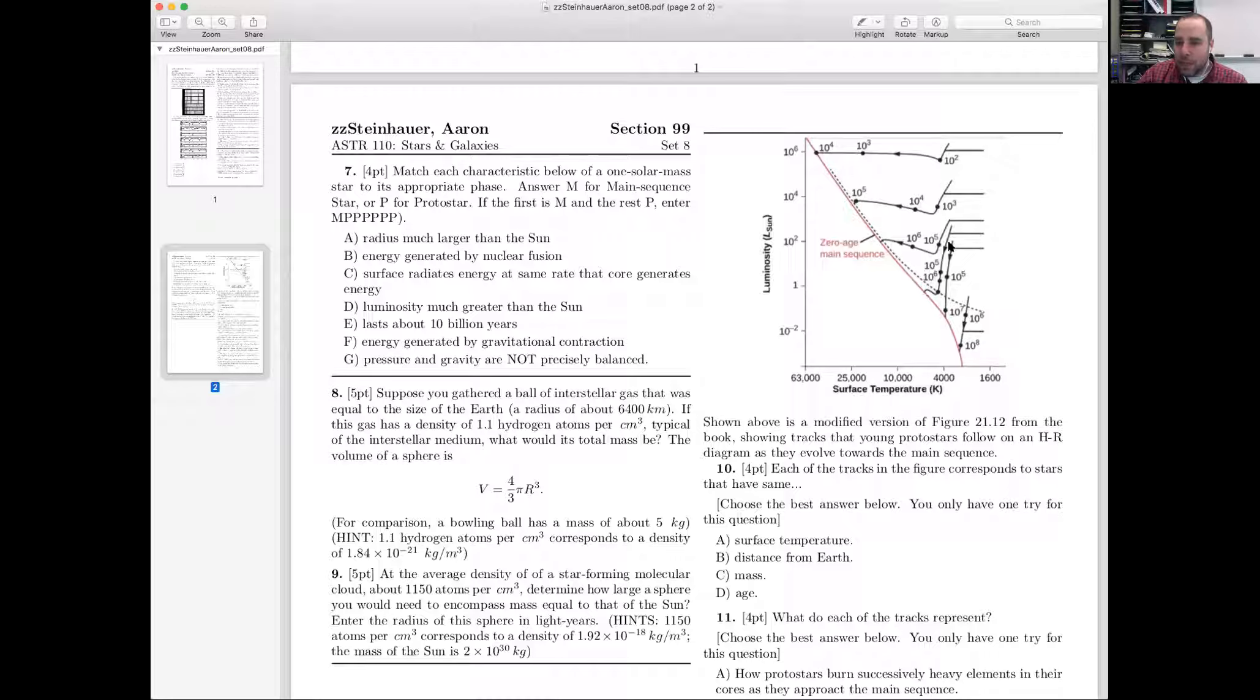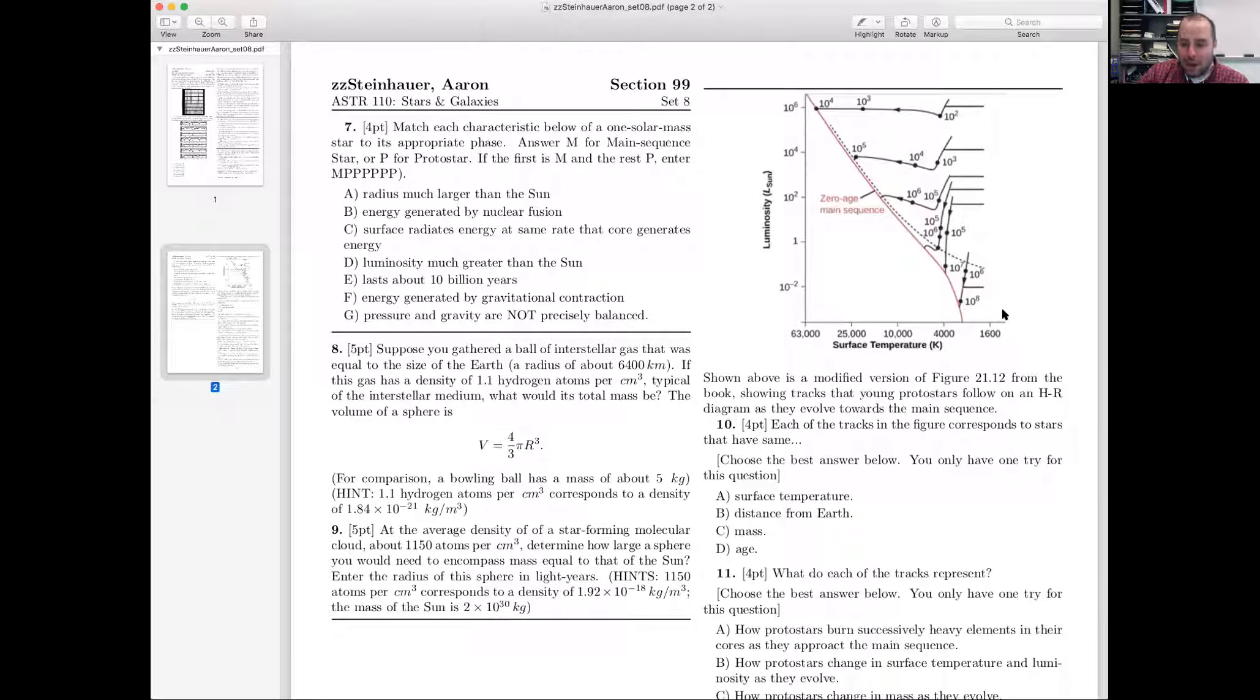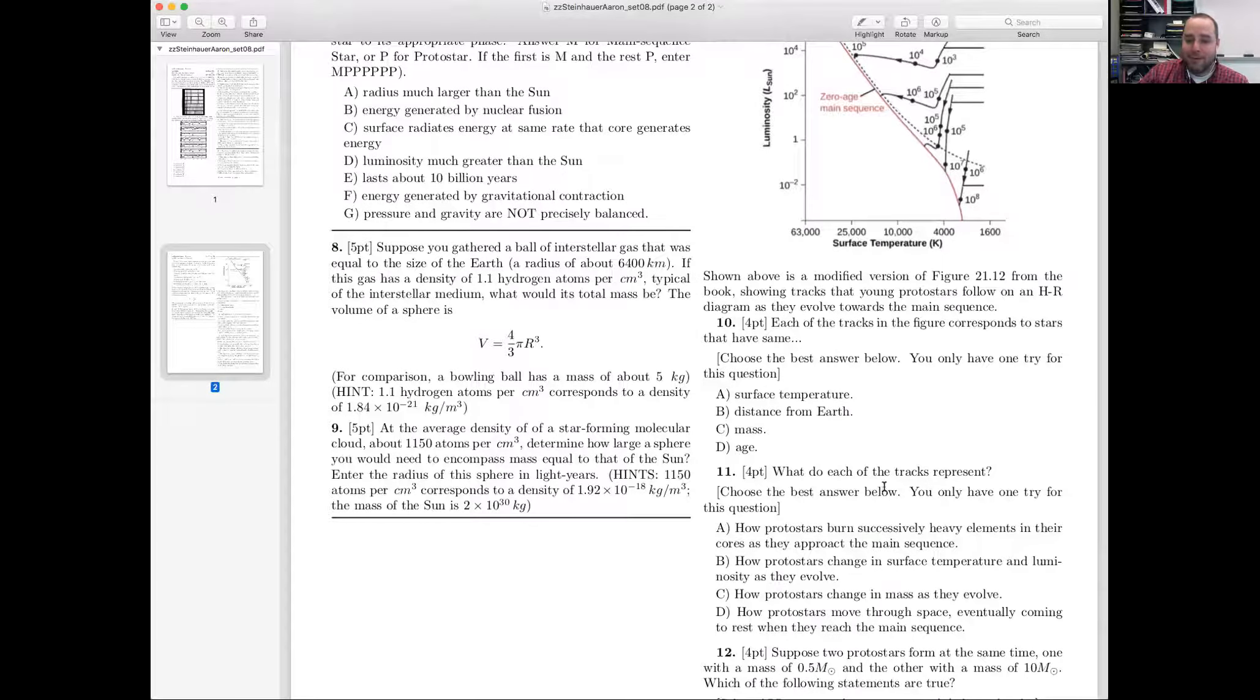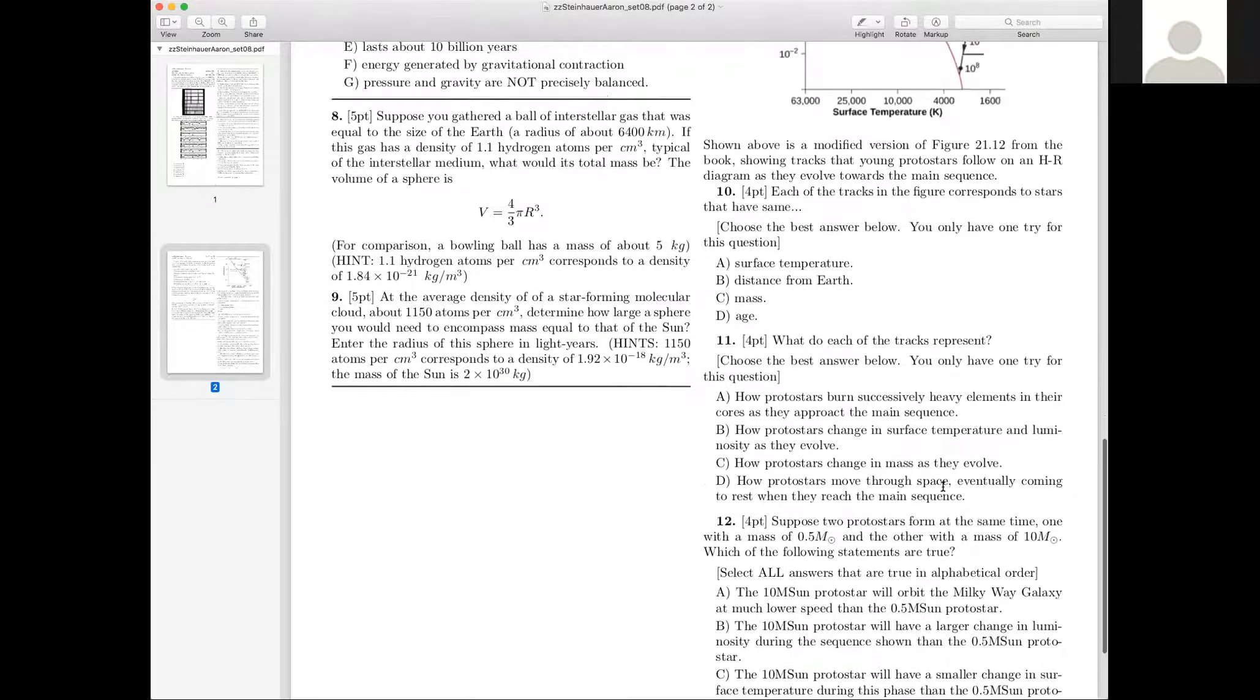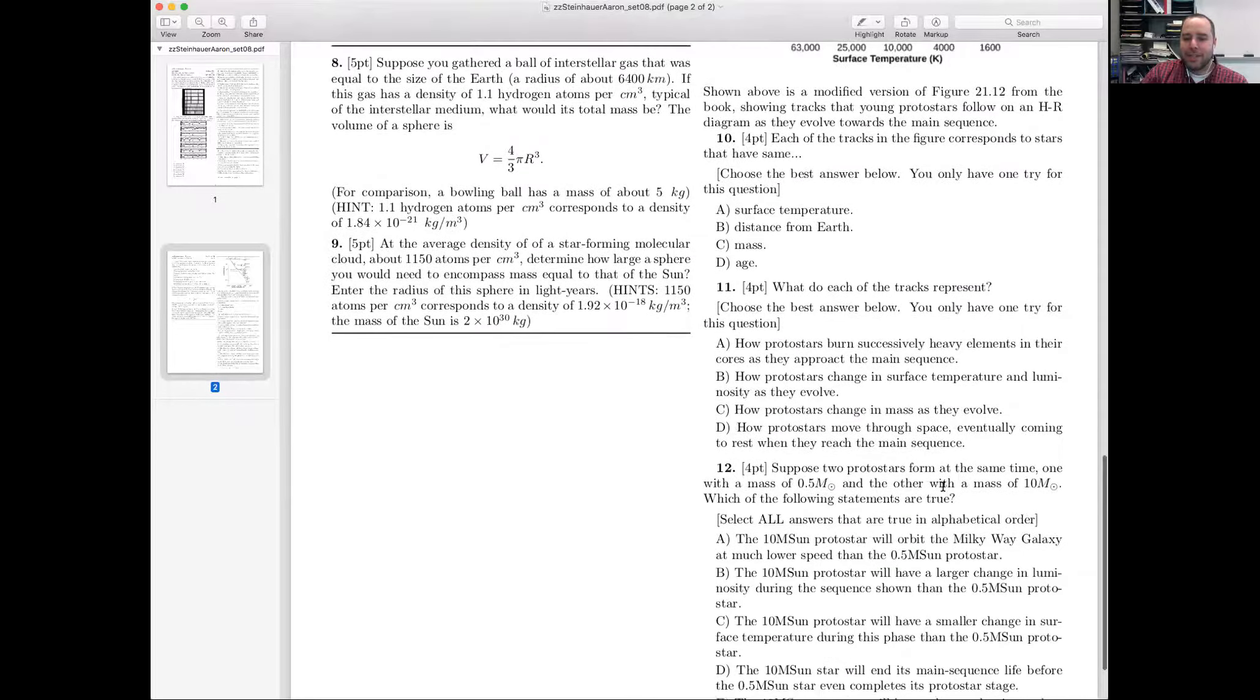What is the difference between this top one and the second one? Well, these are tracks of different mass. Here is the one solar mass star probably here. Here's a half solar mass star. Here's a tenth of a solar mass star. These are, each of these tracks corresponds to a star of a different mass. Each of the tracks has a specific mass. So I've just told you the answer to that. And I've also kind of told you the answer to 11 also.